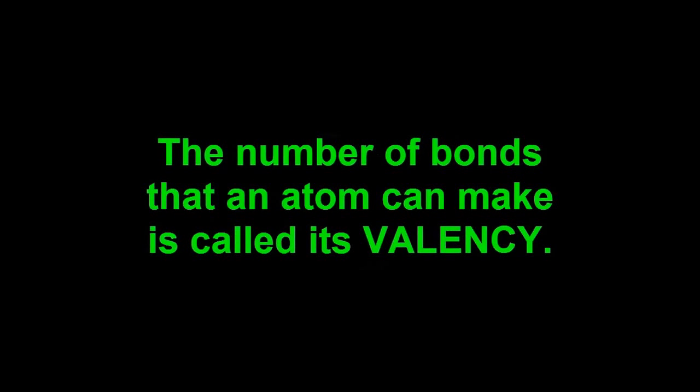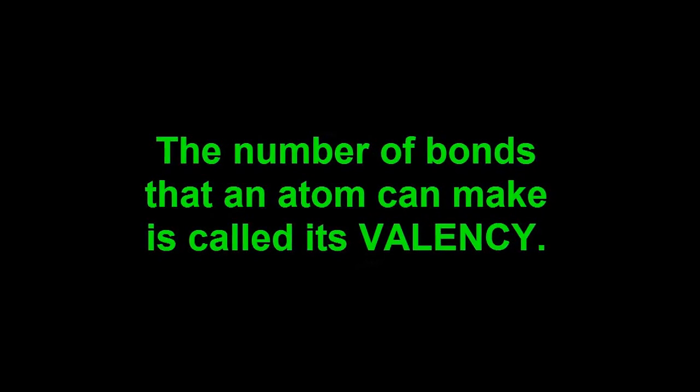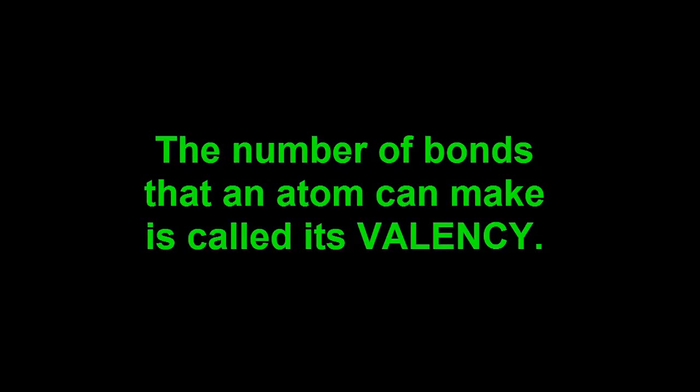We will find that each kind of atom has its own particular bonding power. This number of bonds that an atom can make is called its valency. The valency of hydrogen is one. The valency of oxygen is two.